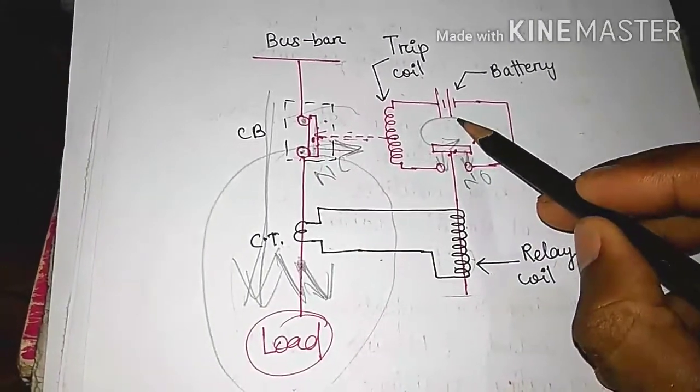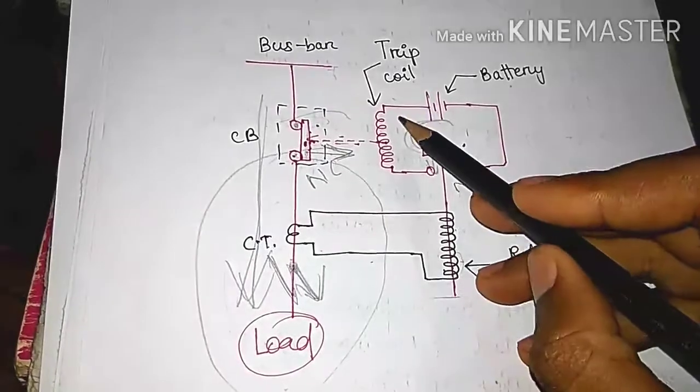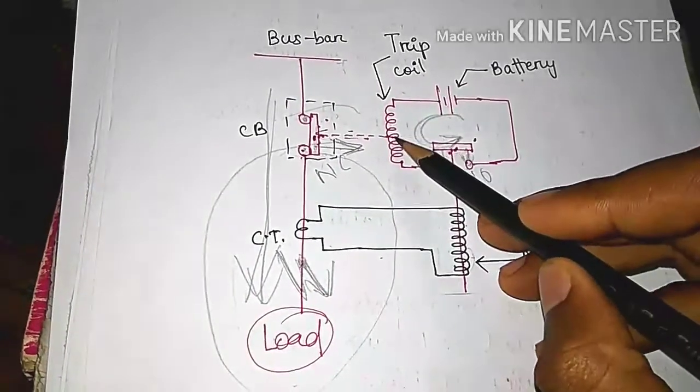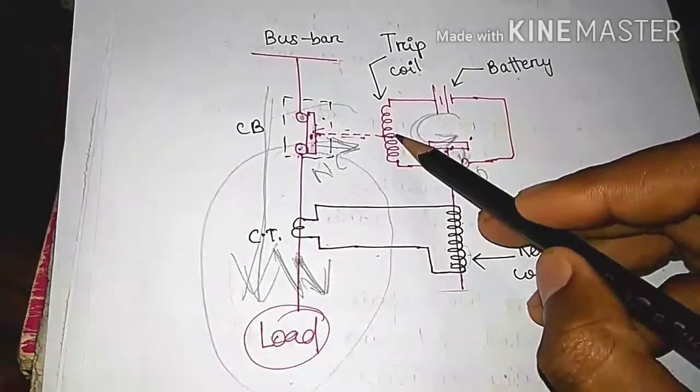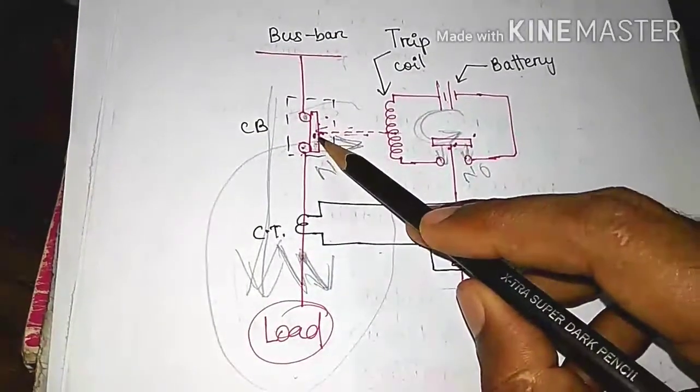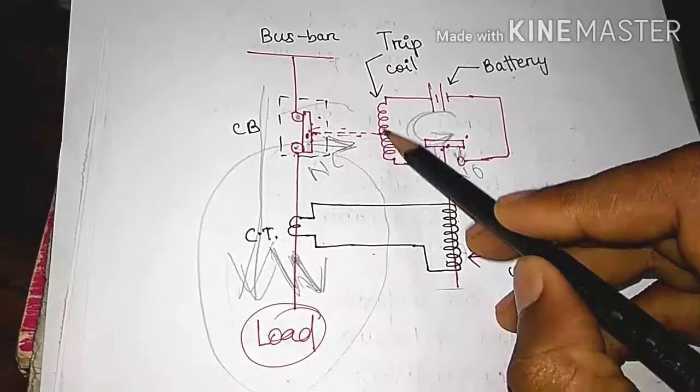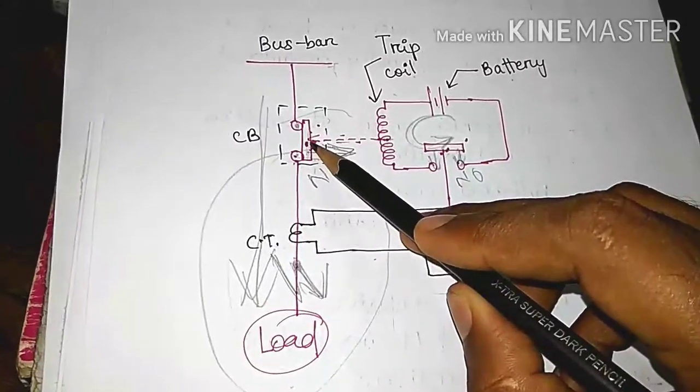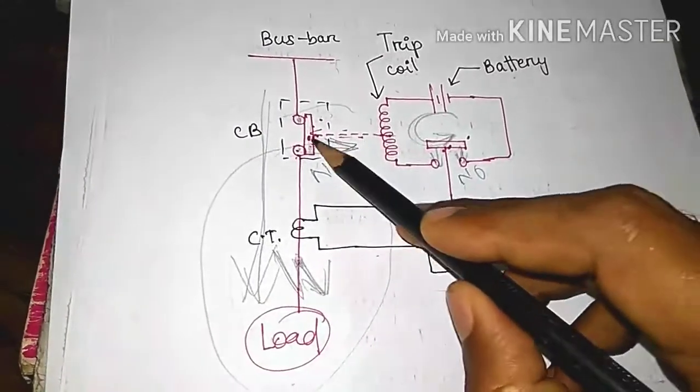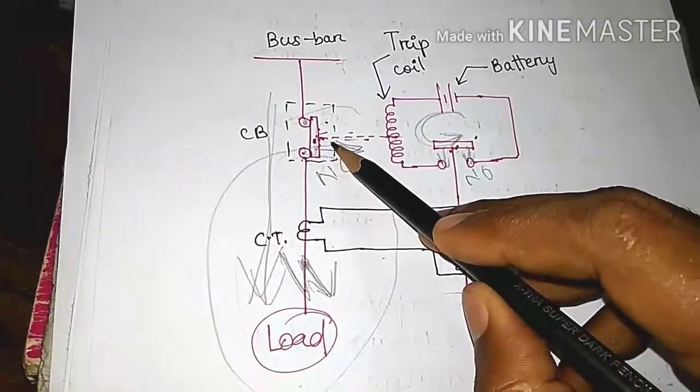Now, a current will flowing through this direction or anticlockwise direction. Then due to this is a tripping coil and current flowing through this coil, it will set up a magnetic field. Due to the moving contact is placed in the tripping coil, the moving contact will be magnetized and it will be moved right side. Then it will be separated from the fixed contact.